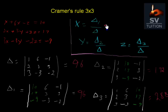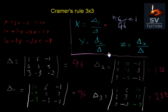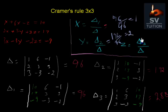Now we just put these values. Delta 1's value is 96 divided by 96, which is 1. For calculating Y's value, the formula is delta 2 divided by delta. Delta 2's value is 192 divided by 96, and it will be 2. And delta 3 divided by delta is the value of Z. Its value is 288 divided by 96, which is 3. That is our answer.